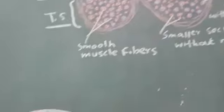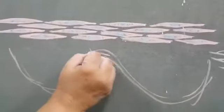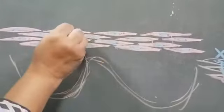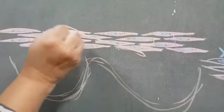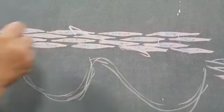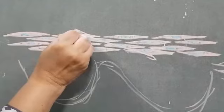For the transverse section, you will form this connective tissue. If you make a section of this, you will get different sections.